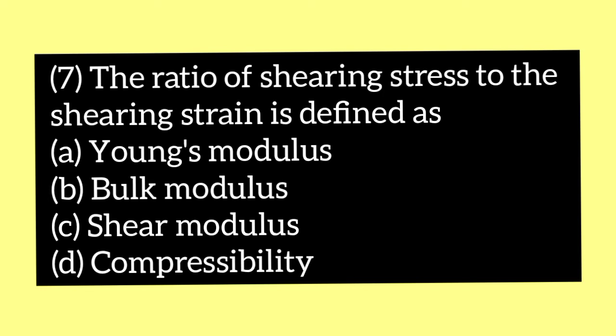The next question: the ratio of shearing stress to the shearing strain is defined as — option A Young's modulus, option B bulk modulus, option C shear modulus, and option D compressibility. The answer is option C, shear modulus.